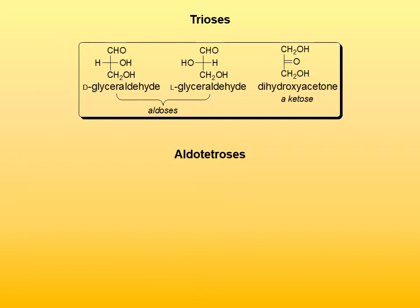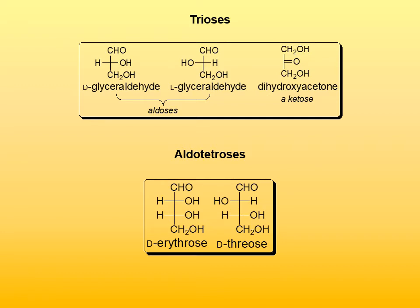Aldotetroses have four carbon atoms, and the aldotetroses of interest are erythrose and threose. There are four aldotetroses total, but here only the natural ones are shown: D-erythrose and D-threose. They form the basis for the nomenclature of erythro/threo isomerism. In Fischer projection, erythrose has two hydroxyl groups on the same side, and threose has them on opposite sides. L-enantiomers would be mirror images of the two shown here.